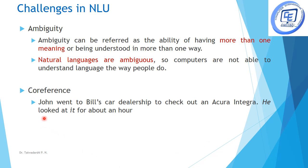The next challenge in natural language understanding is coreference. Take the example: 'John went to Bill's car dealership to check out an Acura Integra. He looked at it for about an hour.' In the second sentence we are using two pronouns — 'he' and 'it'. The pronoun 'he' can mean either John or Bill, because we have two nouns in the previous sentence. And 'it' can mean the car dealership or the car. This is the problem of coreference — it is very difficult to understand which noun a pronoun is referring to.